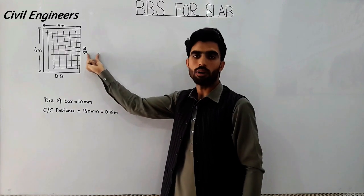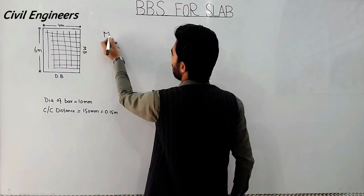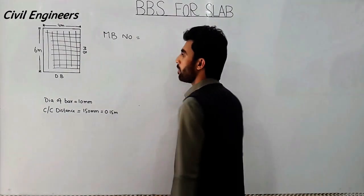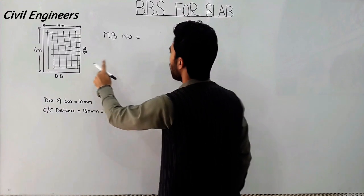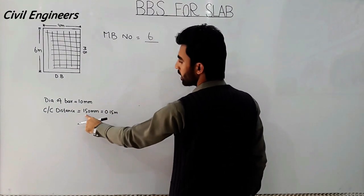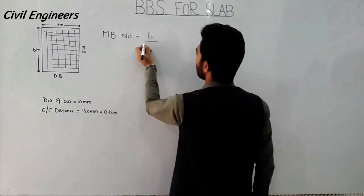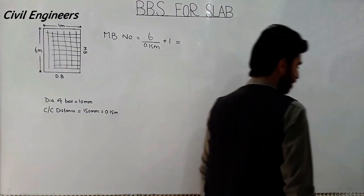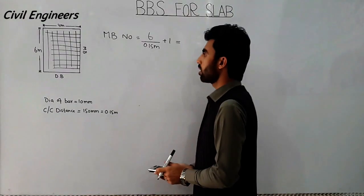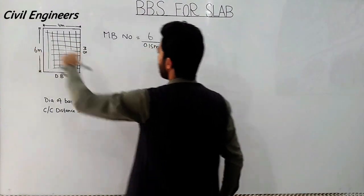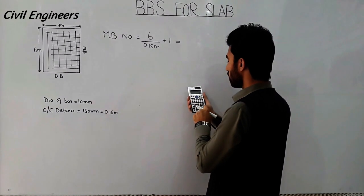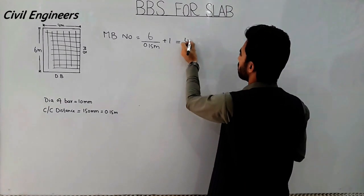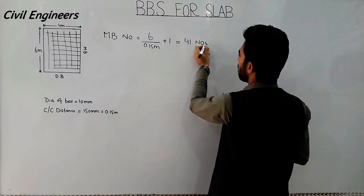Now I will find out the number of main bars required. The main bar length is 6 meters and center-to-center distance is 0.15 meters. So, 6 divided by 0.15 equals 40, plus 1 gives us 41 numbers of main bars.